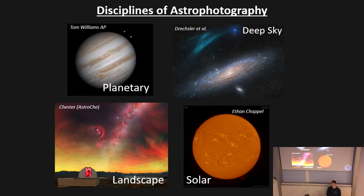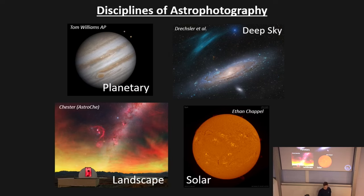Deep sky is what I do — basically anything outside the solar system. When we talk about the deep sky we're normally talking about single objects or regions: a galaxy, a group of galaxies, a nebula, a star cluster. It's very much individual objects rather than huge wide-field views. I do deep sky because I think it's the most interesting — you get the biggest variety of objects and I think they look the prettiest.